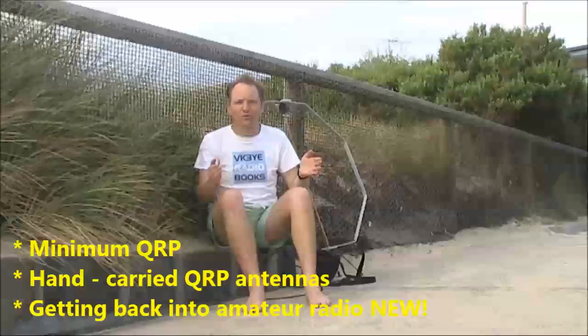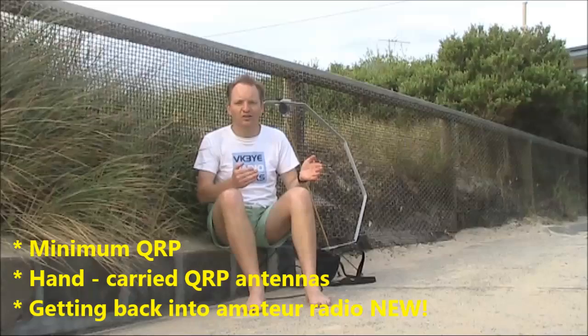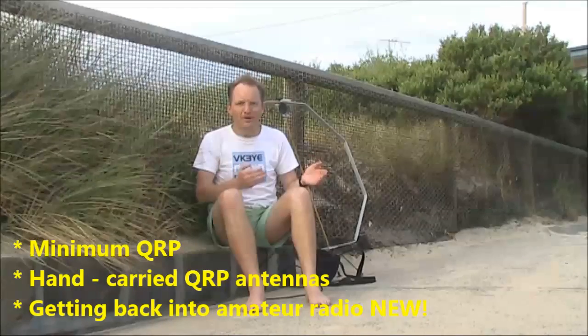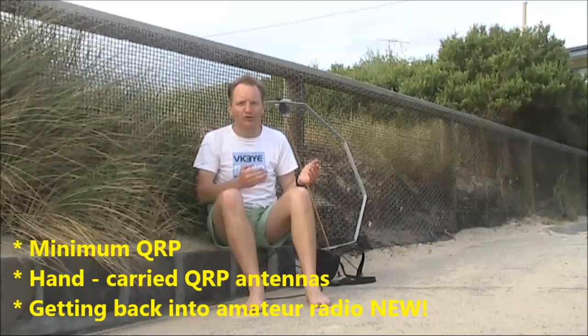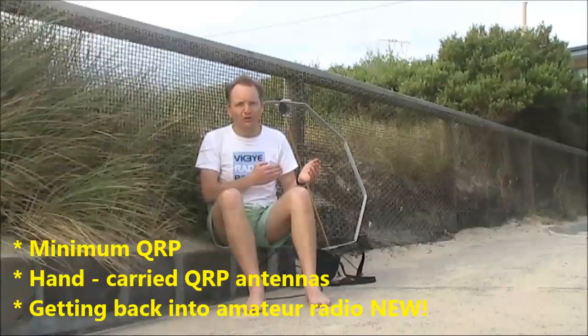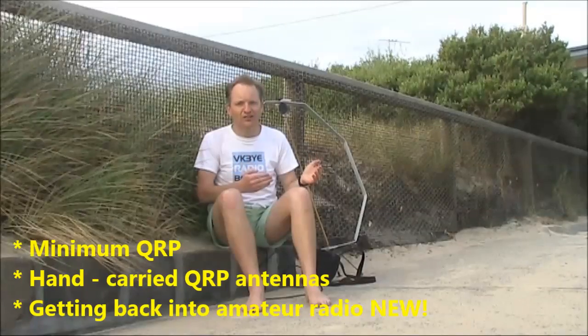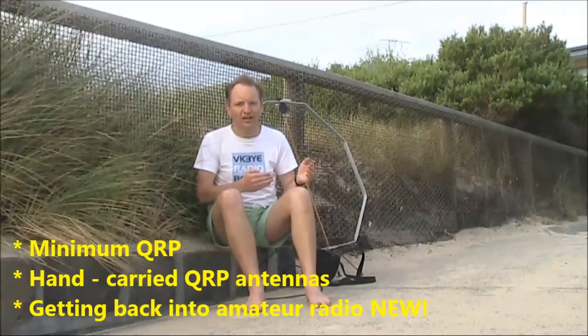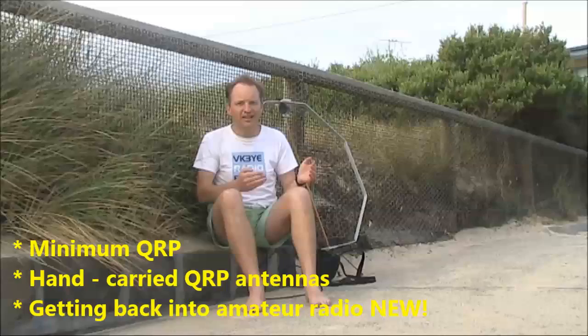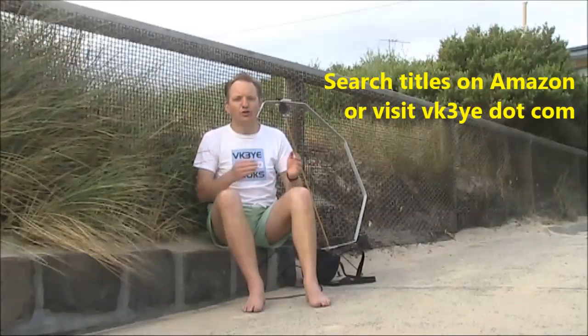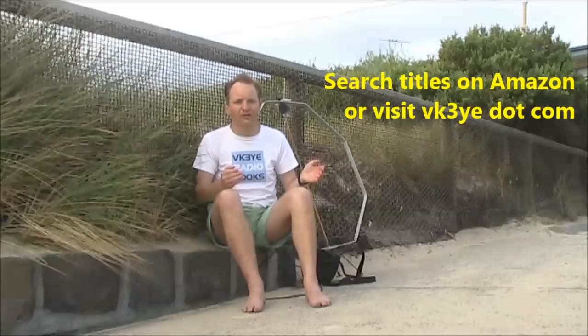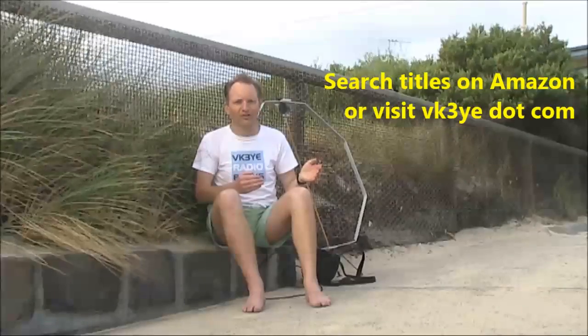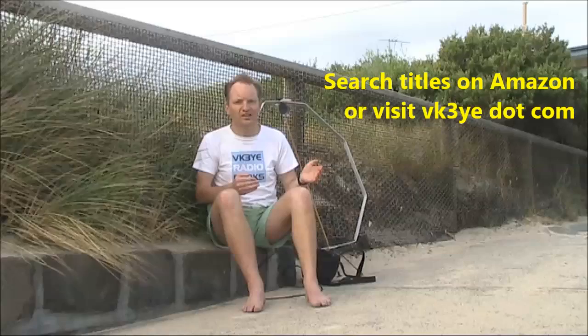If you want to make the most of low-power amateur radio, you need my e-book, Minimum QRP. It's available for under $5 US via Amazon. Or, if you're more into antennas, check out Hand Carried QRP Antennas, again via Amazon, and again under $5. You can find out more about both those titles by searching them in Amazon, or going to my website, vk3ye.com.